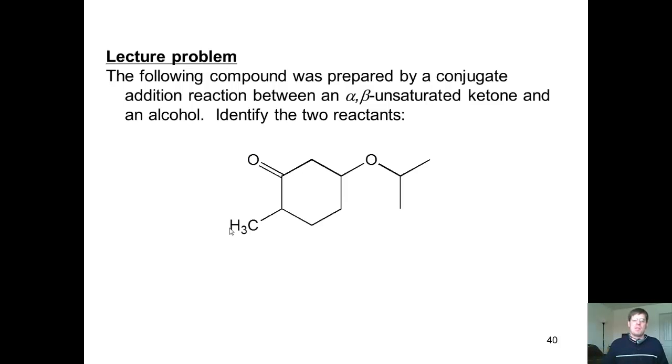So here's an example problem that I want you guys to look at. The following compound was prepared by a conjugate addition reaction between an alpha-beta unsaturated ketone and an alcohol. I want you guys to identify the two reactants. I'm not going to give you the answer to this right now, but I'll let you guys think about it, and we can talk about it more in class together.